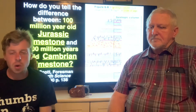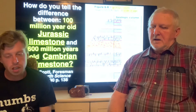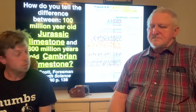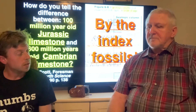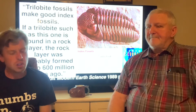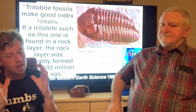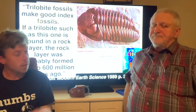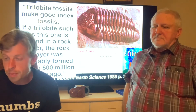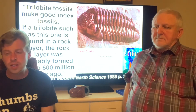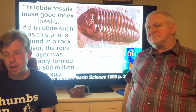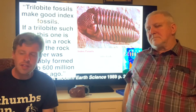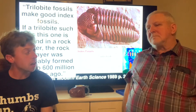How can you tell the difference between 100 million year old Jurassic limestone and 600 million year old Carboniferous limestone? By the index fossils like we mentioned — this is a trilobite, one of the first animals to come right after the big bang. Trilobite fossils make good index fossils. If a trilobite such as this one is found in a rock layer, the rock layer was probably formed 500 to 600 million years ago.